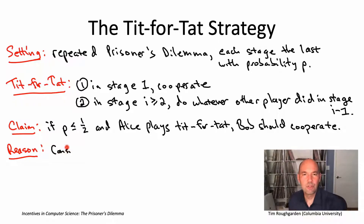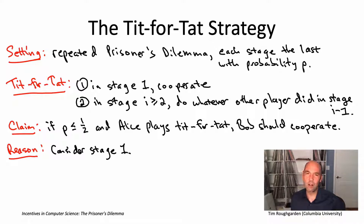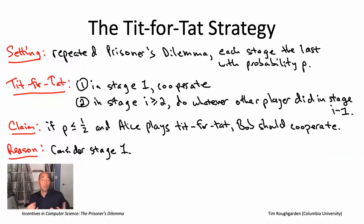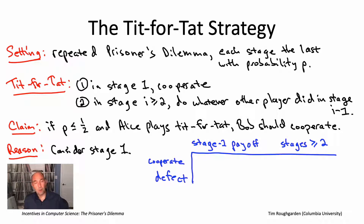I'm going to make the argument just for stage one, but once it holds for stage one it's going to hold for all subsequent stages also. Bob knows he's playing against tit-for-tat — he knows Alice is going to start optimistically and cooperate in the first stage. We're going to put ourselves in Bob's shoes and do a cost-benefit analysis, asking: if we cooperated in stage one, what would be our payoff right now, and what payoff do we expect in future stages?